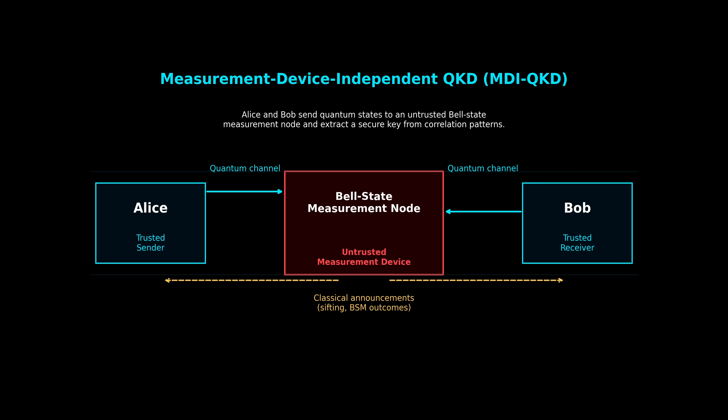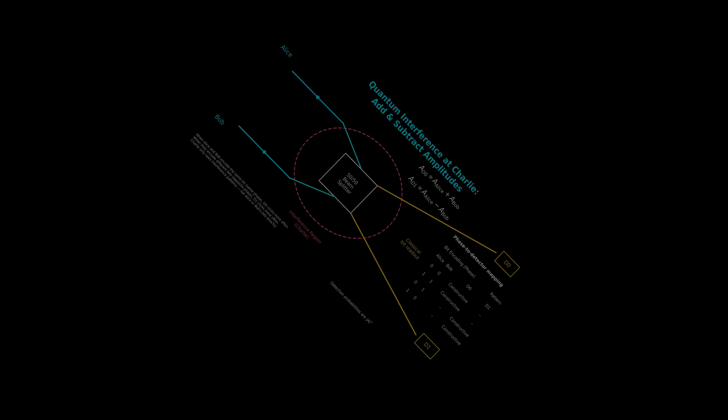MDI-QKD removes detector vulnerabilities entirely and creates a protocol that remains secure even if Eve physically controls the measurement device. Now, from this depiction, we can see what actually happens inside Charlie's measurement station during MDI-QKD.